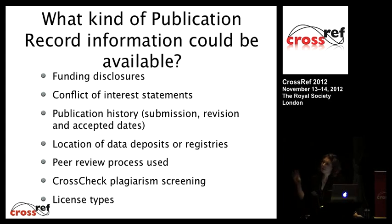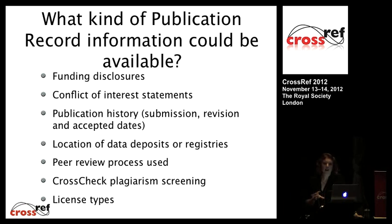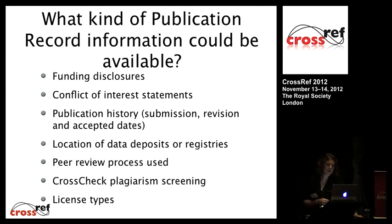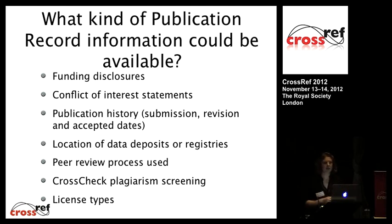Thinking about what kind of publication record information could be available: we expect that different communities of interest might develop their own guidelines or best practices. There's interesting discussion around displaying open access metadata in there — again giving people one place to find this information. Publishers are thinking about what they want to display and how they're going to transmit it into the XML so it can feed into this.